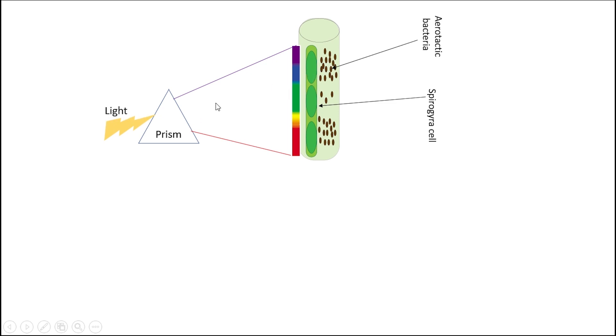Aerobic bacteria need oxygen for their survival. As he passes light from prism, it splits into a light spectrum. After exposure of light spectrum, the bacteria had gathered around the portions of the filament illuminated by red and blue light.